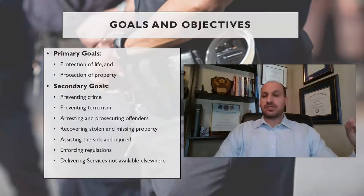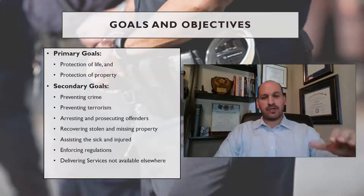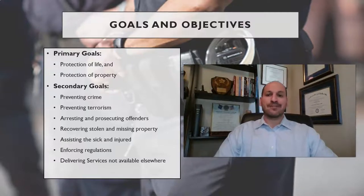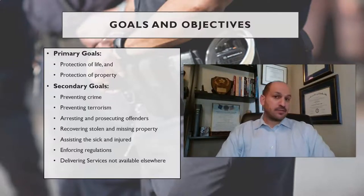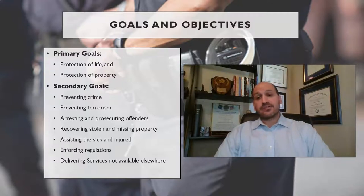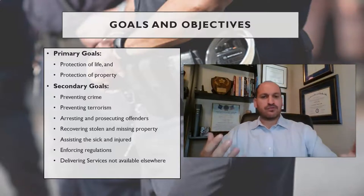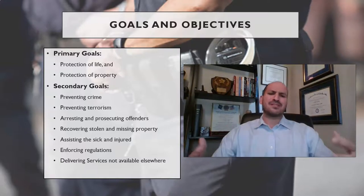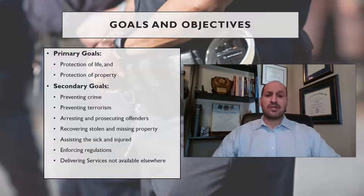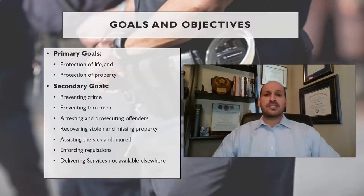One thing we can mostly all agree on is that the primary goal of policing is, first and foremost, to protect life — life and then property. Those are the primary goals. The secondary goals are different: to prevent crime, prevent terrorism, prosecute offenders, recover property, enforcing regulations, delivering services, assisting the sick and injured. We can argue about which secondary goal should be more important, but the gold standard — the primary function of all police — is to protect life, first and foremost.